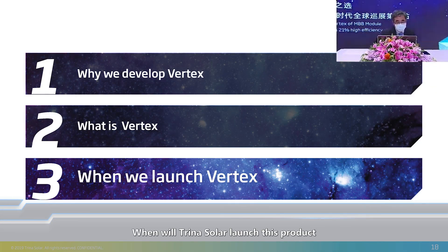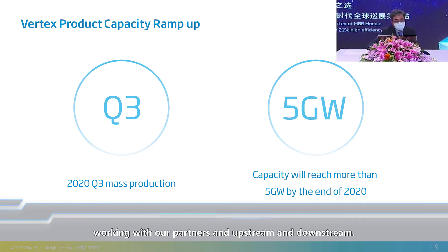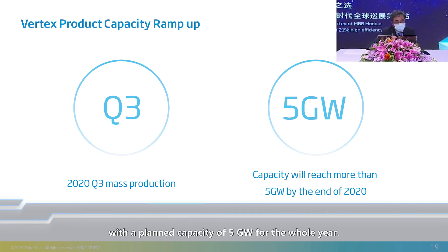When will Trina Solar launch this product and supply customers in large quantities? We started development of this new product in August and September last year, working with our upstream and downstream partners. As a manufacturer of modules, Trina Solar plans to put it in mass production in Q3 this year, with a planned capacity of 5 gigawatts for the whole year.